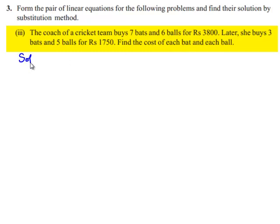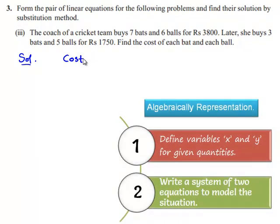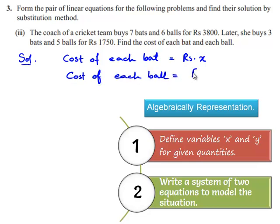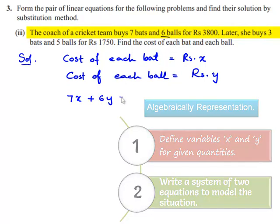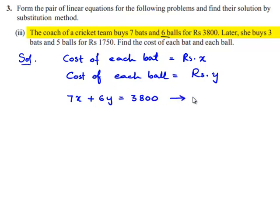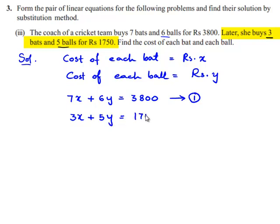Let us work out this problem. Let us assume the cost of each bat is equal to rupees x and the cost of each ball is equal to rupees y. So we can write 7x plus 6y is equal to 3800 — let this be equation number 1. And 3 bats and 5 balls gives us 3x plus 5y is equal to 1750 — let this be equation number 2.